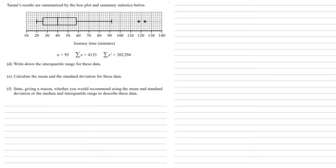Taruni's results are summarized by the box plot and summary statistics below. For Part D, we need to write down the interquartile range for these data. Here's our upper quartile of 58 and our lower quartile of 26. The interquartile range is just the upper quartile minus the lower quartile, which is 32 minutes.